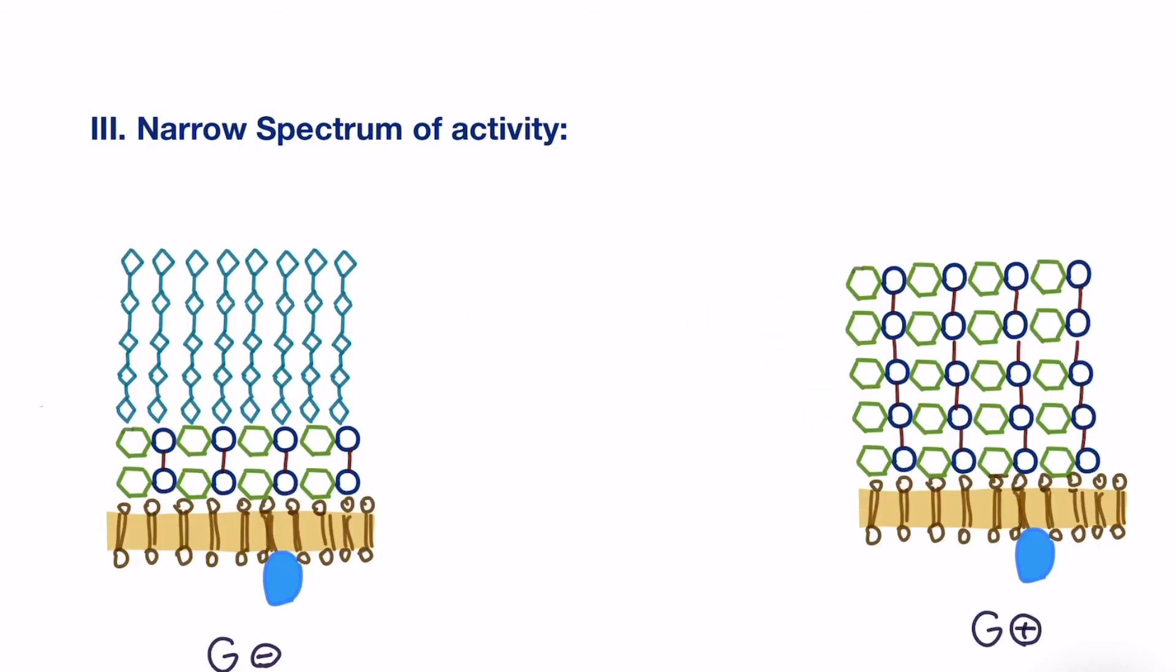Lastly, we're going to talk about narrow spectrum of activity. Penicillin, and especially the old generation, have narrow spectrum, meaning they are not very effective against particularly gram-negative bacteria.